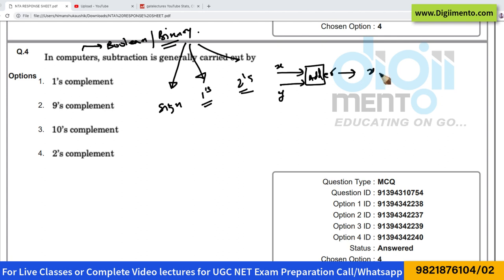This adder will do x plus y. So the second way of doing a subtraction is you can give a number x, and for the y number, give 1's complement of y. 1's complement of y will represent negative of y, that is minus y.